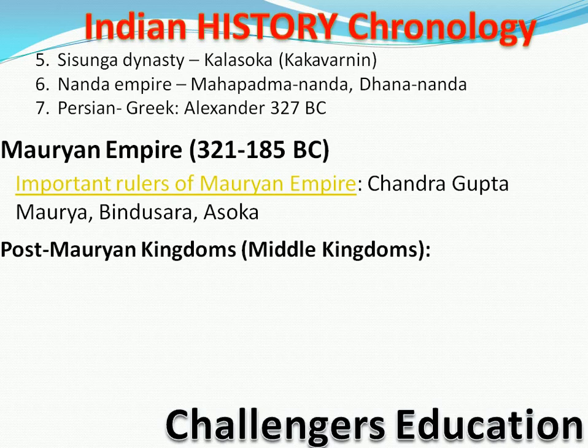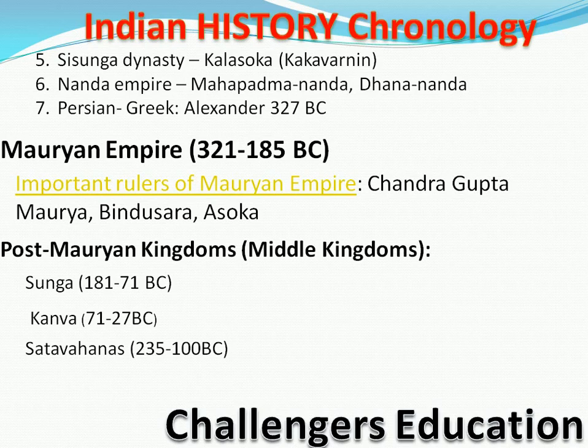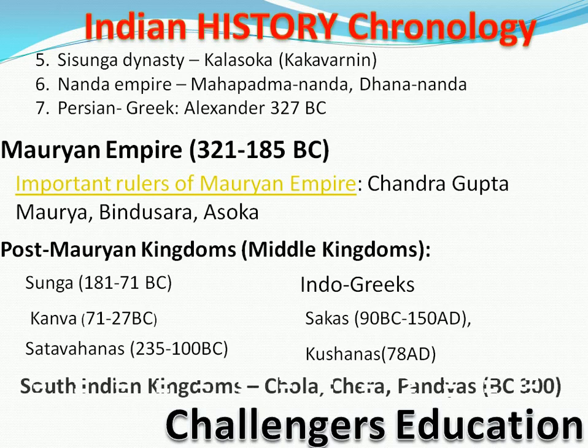Post-Maurian ya middle kingdom mein aata hai — Shunga dynasty, Kanva, Satavahana, Indo-Greek, Shaka aur Kushan. Agar rulers ki baat karoon to South India mein padhenge — Chola, Chera, Pandya — yeh kuch dynasties hain jo hum aage padhenge after this chronology video, agle videos ke andar.